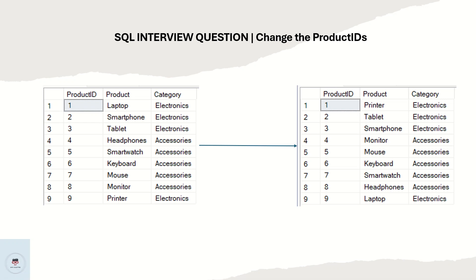Hello everyone, welcome back to my channel Data Sculptor. Today we are going to see another interesting SQL question. You have a table called 'products' with columns product ID, product, and category. The output also shows product ID, product, and category, but the product IDs are changed — for example, laptop has product ID 1 in the input, but in the output printer has product ID 1. Smartphone and tablet values are interchanged as well. Try to analyze the logic behind it and derive it using an SQL query.